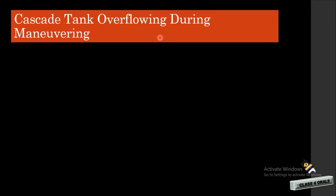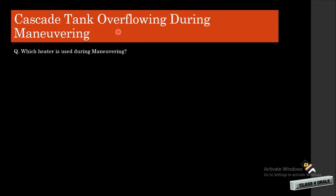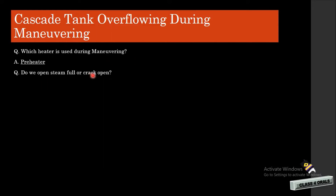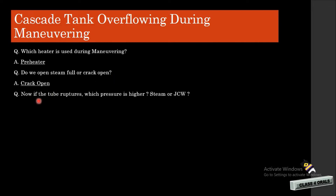First of all, we are taking the reasons of cascade tank overflowing during maneuvering. The question is: which heater are we using during maneuvering? It is the preheater. Do we open the steam fully or crack open? It is crack open. But suppose the tube has ruptured in the preheater.